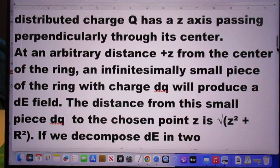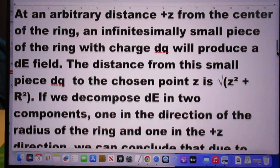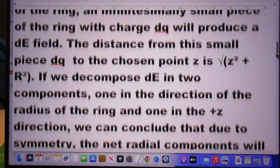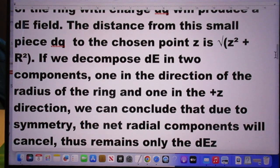At an arbitrary distance plus Z from the center of the ring, an infinitesimally small piece of the ring with charge DQ will produce a field DE. The distance from this small piece DQ to the chosen point Z is given by the following equation.